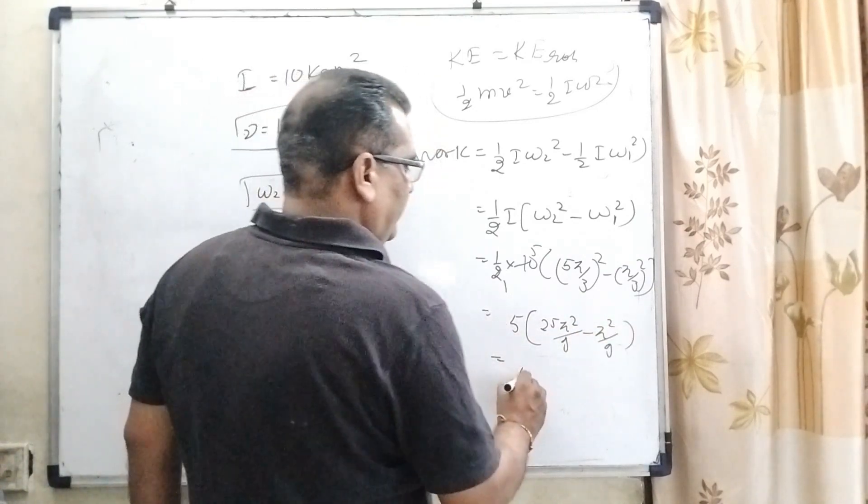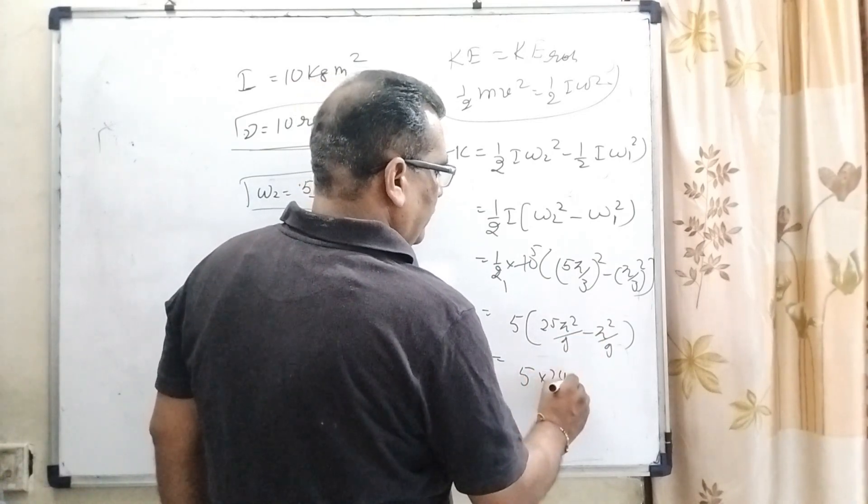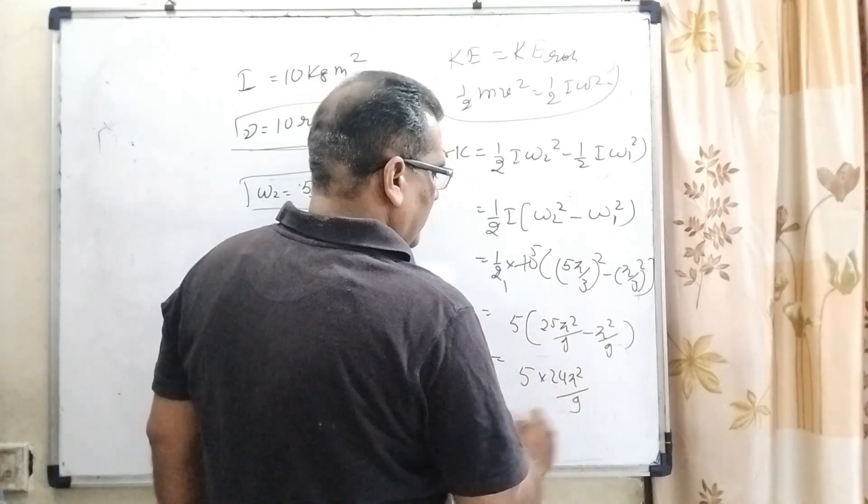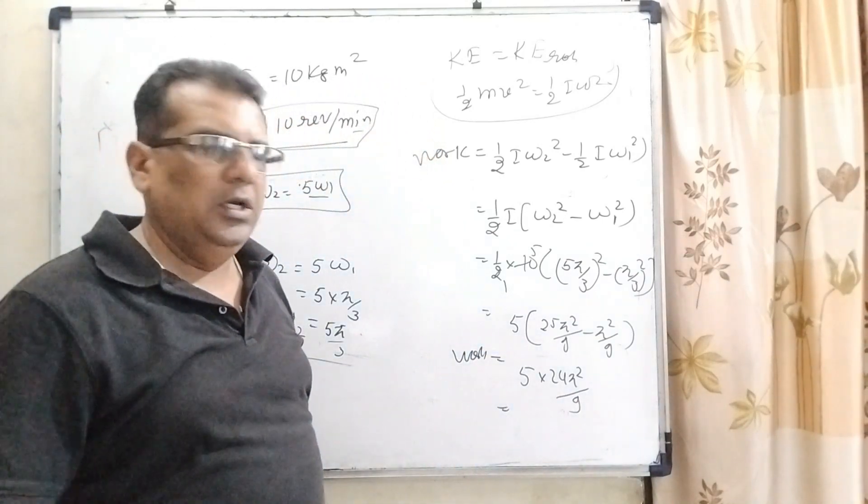So, here, 5 and 25 minus 1, that is, 24 pi square by 9. After solving, this value will get 131 point joule. But,